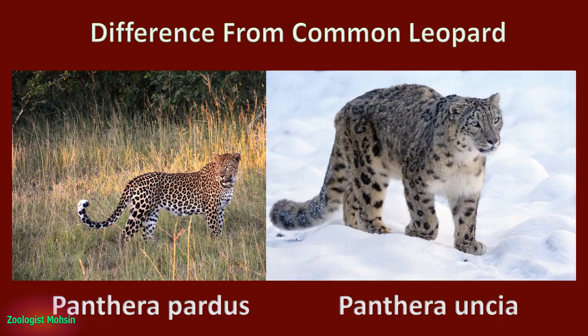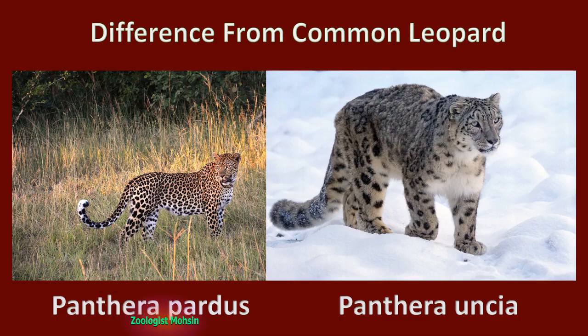The snow leopard is different from the common leopard in fur, color, dark spot patterns, long tail, and whitish look. Their beautiful body coat has long hairs with woolly underfur to protect them against cold. The spot markings are well-defined and are far apart compared to the common leopard's.